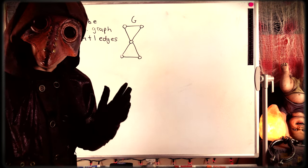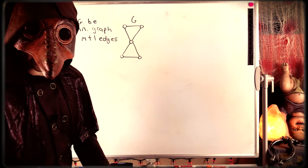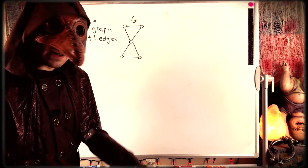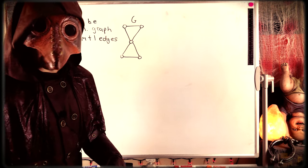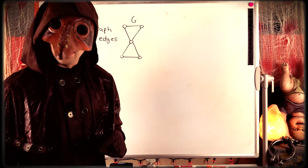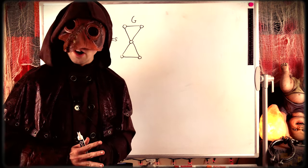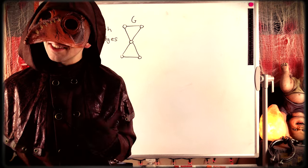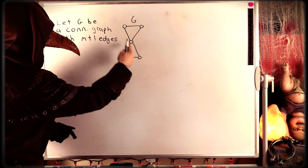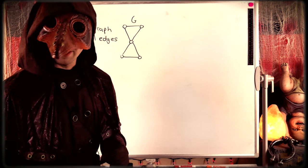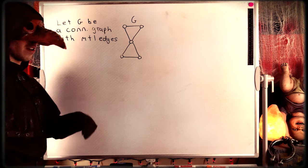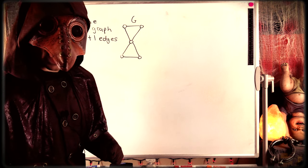Certainly, if G is itself a tree — if it's connected and has no cycles — then it is its own spanning tree, so it has a spanning tree and we are done. If G is not a tree, then it must have a cycle. Remember that trees are connected graphs with no cycles, so if our connected graph is not a tree, it's got to have a cycle.